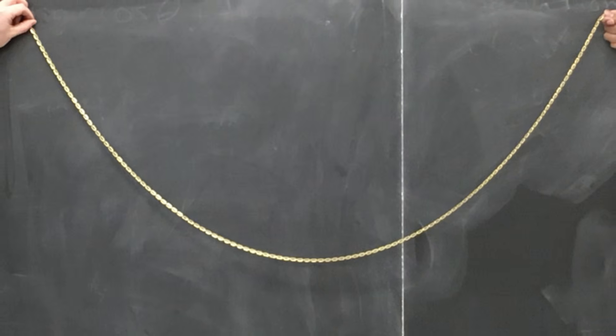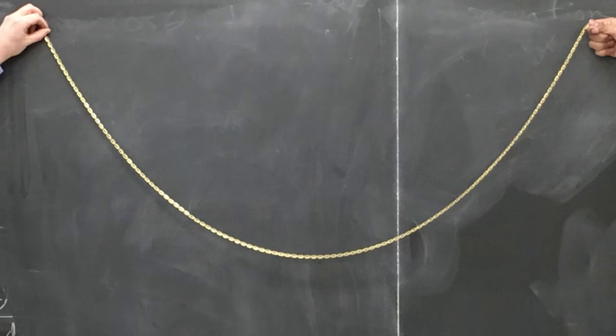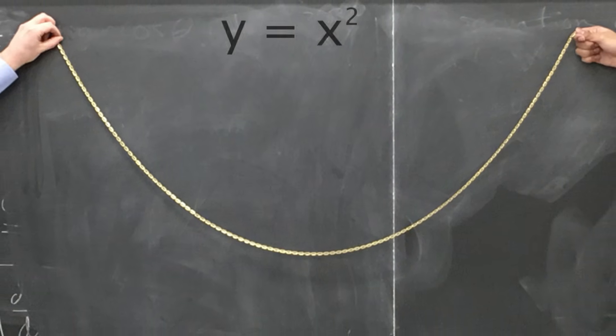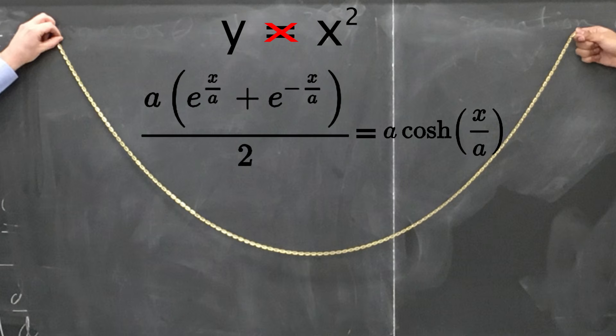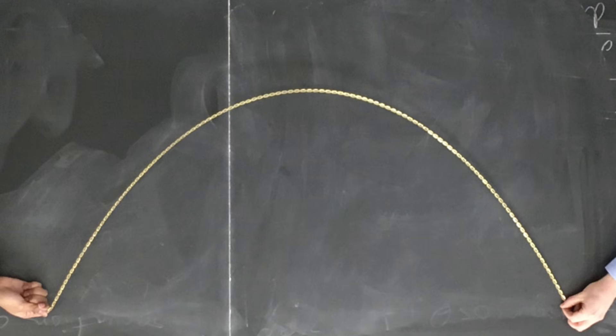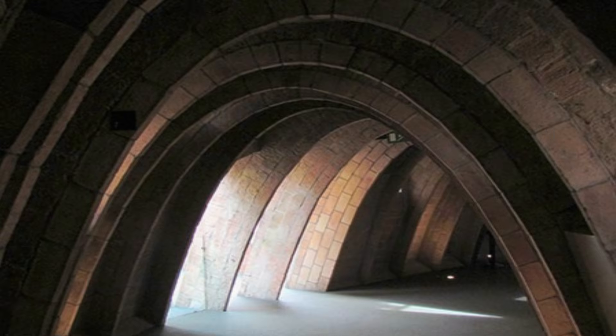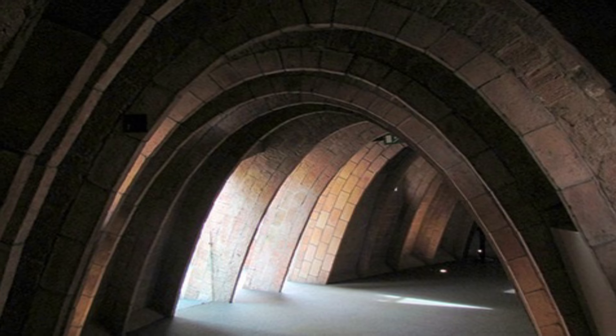If you hold a chain or a rope at both ends and just let it hang, what shape will it make? You may think it makes a parabola, which was the assumption at one point in time. But in fact, it makes a different shape, one with this equation, which is also a hyperbolic cosine curve. This is known as a catenary. If you turn the shape upside down, you get the shape of many arches found around the world. And this is used because of how forces are distributed throughout the arch as a result.